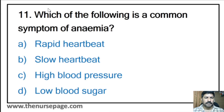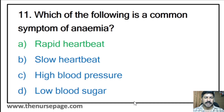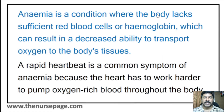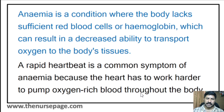Eleventh question: Which of the following is a common symptom of anemia? Rapid heartbeat, slow heartbeat, high blood pressure, low blood pressure, or blood sugar changes? The correct answer is rapid heartbeat, that is tachycardia. Anemia is a condition where the body lacks sufficient red blood cells or hemoglobin, resulting in decreased ability to transport oxygen. The heart has to work harder to pump oxygen-rich blood, which is why heart rate increases.